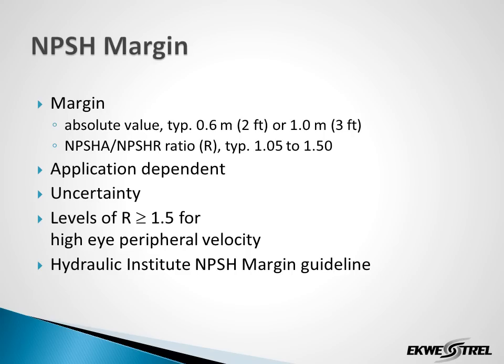Some explanation of NPSH margin: it can be either an absolute value or a ratio — the ratio of NPSH available over NPSH required. NPSH margin ratios in the range of 1.05 to 1.5 are typical. NPSH margin ratios greater than 1.5 may be required for impeller inlet velocities that are quite elevated, such as found in boiler feed pumps, water injection pumps, and other high head pump types. Incidentally, the Hydraulic Institute is close to releasing a new NPSH margin guideline.